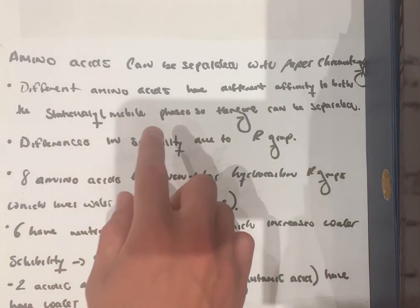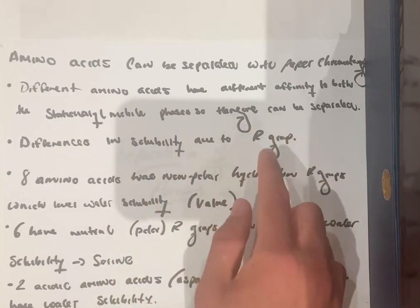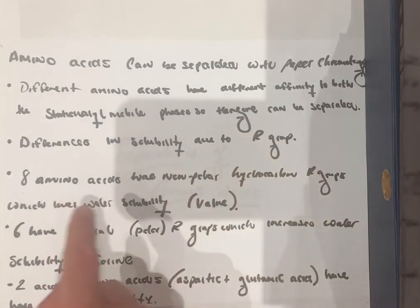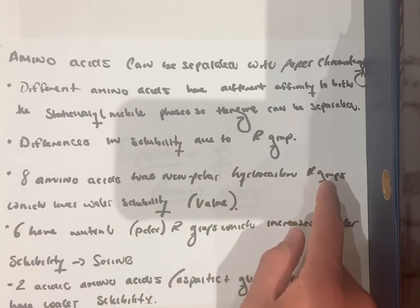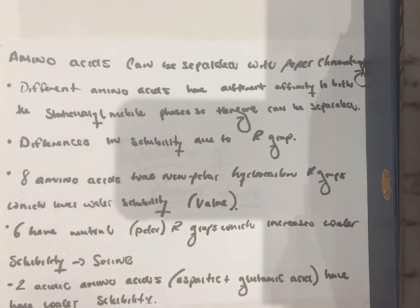This difference in the solubility and the affinity of each amino acid is due to the R group. The R group is the variable group. This is different and unique depending on the amino acid. Eight amino acids have non-polar hydrocarbon R groups, for example, CH3, C2H5, or H for glycine. An example is valine. These non-polar hydrocarbon R groups lower the water solubility because they cannot form hydrogen bonds with water or the eluting solvent and therefore have a greater affinity for the stationary phase.